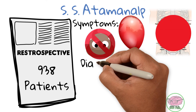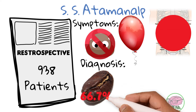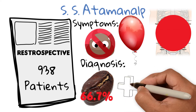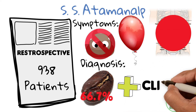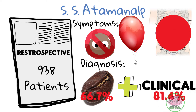Regarding diagnosis, the coffee bean sign found on plain x-rays helped diagnose 66.7 percent of patients with volvulus. Adding clinical symptoms to the coffee bean sign improved the diagnostic rate to 81.4 percent of all volvulus patients.